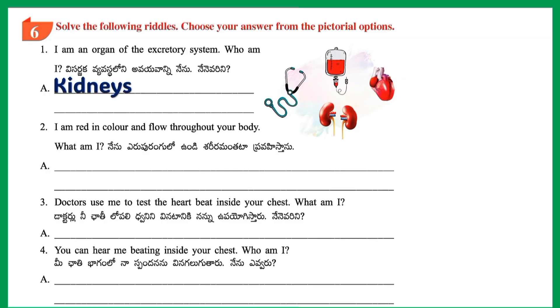Riddle 2: I am red in color and flow throughout your body. Who am I? Answer: Blood.